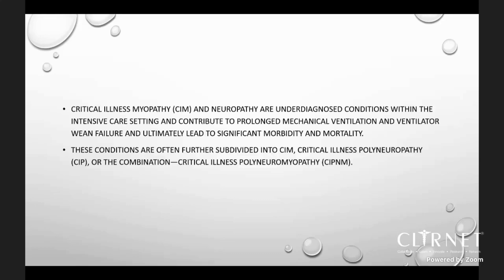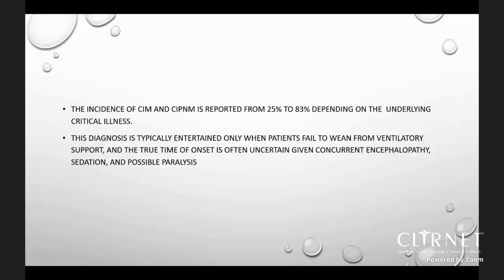It is an umbrella term further subdivided into critical illness myopathy, critical illness polyneuropathy, or a combination called critical illness polyneuropathy and myopathy. The incidence of CIM and CIPNM is reported from about 25% to 83% depending on the underlying critical illness. Diagnosis is typically entertained only when patients fail to wean from ventilatory support, and the true time of onset is often uncertain given concurrent encephalopathy, sedation, and possible paralysis.